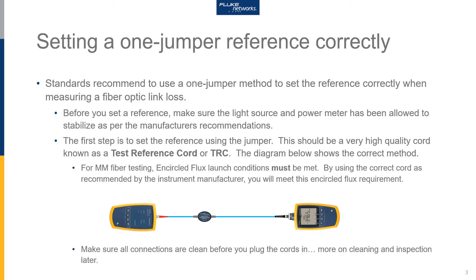As you can see here in our diagram, our source output is connected to our power meter input using a test reference cord. The input connector on the power meter should be the same as the connectors used in the system under test — so if you've got LCs, you need an LC adapter; if you're testing SC terminated fibers, you need an SC connector. But before you connect anything, make sure you inspect and clean, if necessary, all the connections, including the instrument ports and the test reference cord connectors.